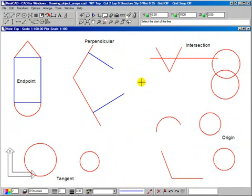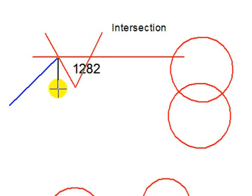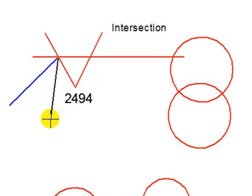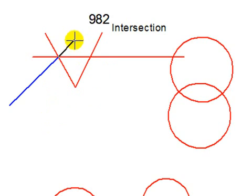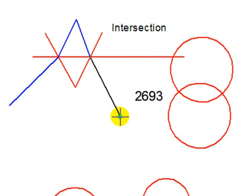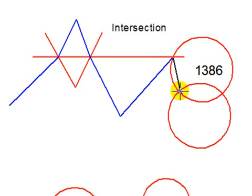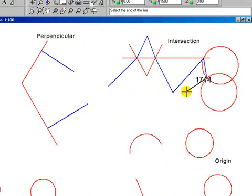And intersections. If I start a line from here and point to where these two lines intersect, I get a small cross on my cursor, click, and I've snapped directly at that intersection point. I go up here, back down to this intersection point, the small x appears again, I click, and I've snapped to the intersection of those two lines. I can also go across to the intersection of a line and a circle, or a circle and a circle, and so on.